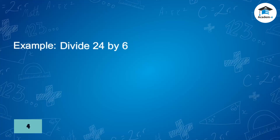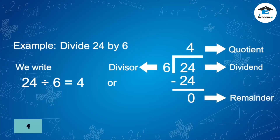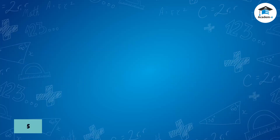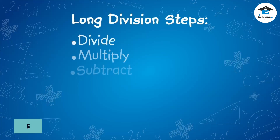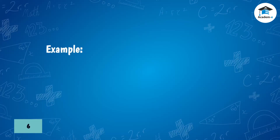Example: divide 24 by 6. What is being divided is called the dividend. The number by which the dividend is being divided is the divisor. The answer in a division problem is the quotient.